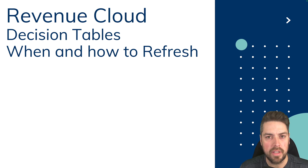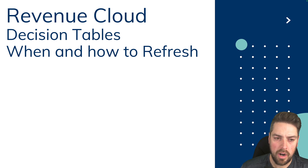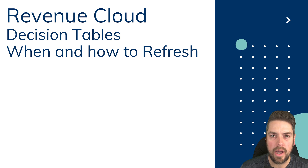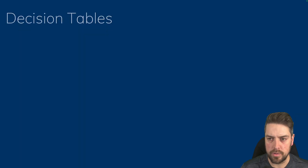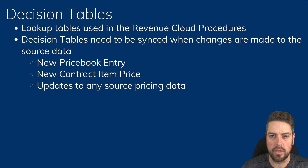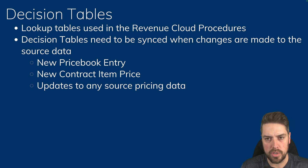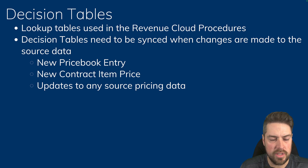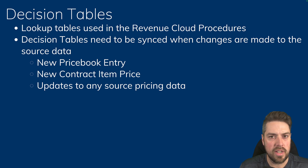Today we're going to be talking about decision tables in Revenue Cloud — what they are, and when and how to refresh those decision tables. Decision tables are the lookup tables used in different Revenue Cloud procedures, for example pricing procedures and qualification procedures. You need some reference data to use in those different procedures, and that reference data is held in those decision tables.